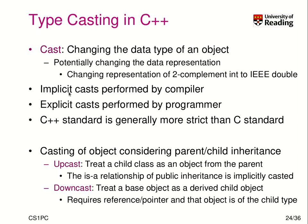There are implicit casts that are performed by the compiler and explicit casts that are performed and requested by the programmer. The C++ standard is much more strict than the C standard, so you may encounter errors when you don't use explicit casts in C++, while in C they would be accepted and done implicitly by the compiler.